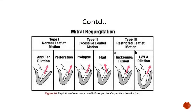On echocardiography, you can draw a line at the hinge point and observe mitral leaflet movement in systole to see whether it is going above the hinge point or not, and you can measure the thickness of the leaflet.